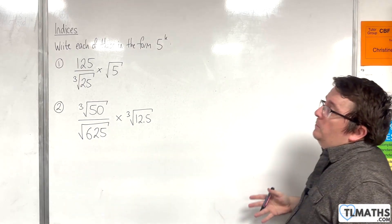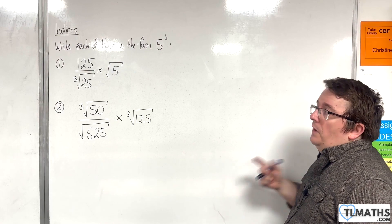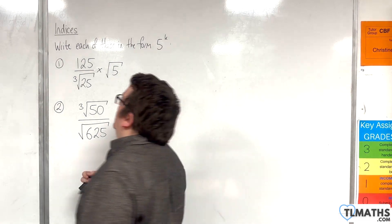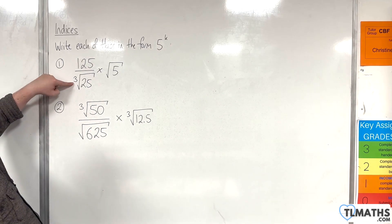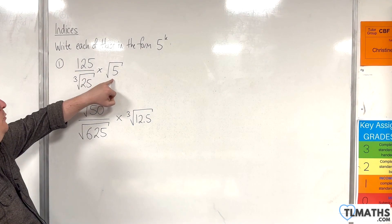In this video, I want to go through a couple of examples of writing these in the form 5 to the power of k. So for the first one, we've got 125 over the cube root 25 times by root 5.